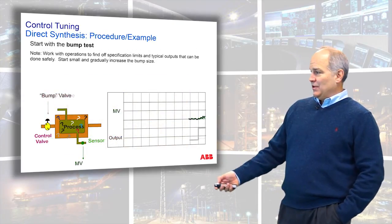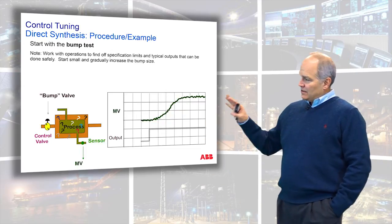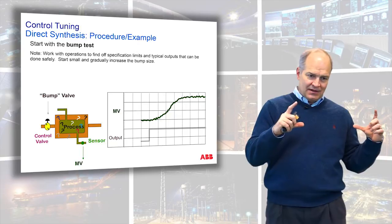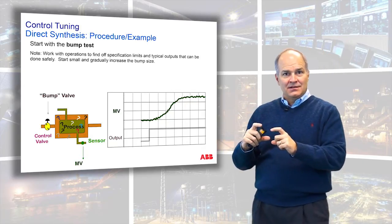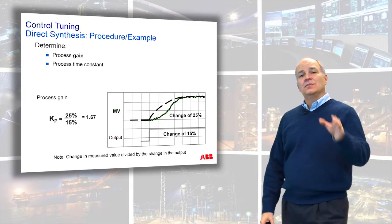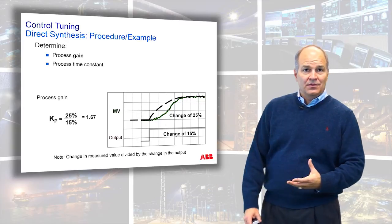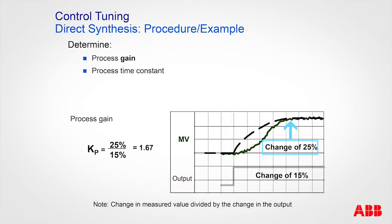Here's a worked example. We walk up to a unit in manual and do a bump test — we can see the set point, the output change, and the process response. Looking at the response shape, this is a second-order overdamped process, but we're still going to model it as first order. The process gain is the change in process variable divided by the change in output: we made a 25% output change and got a 15% process change, giving a gain of 1.67. Doing multiple bump tests confirms this gain is consistent over the operating range.